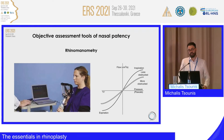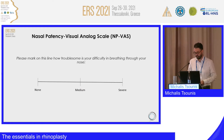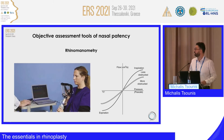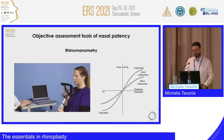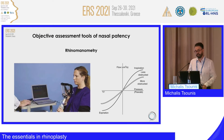For objective assessment tools, perhaps the most popular is rhinomanometry. The setup involves a large mask connected to a PC. This method calculates airflow in the nasal cavity and the pressure required to achieve that airflow, producing a curve that represents nasal resistance within the nasal airway.